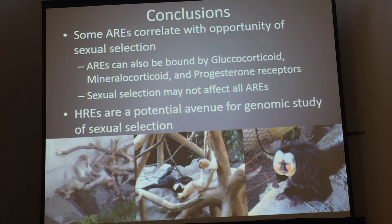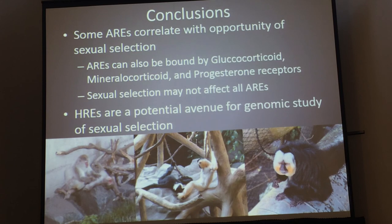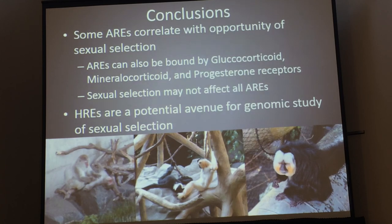In conclusion, I think hormone response elements are a potential avenue for the genomic study of sexual selection. Where I plan to go from here: I now know the position of these response elements in annotated genomes, so I'm going through and comparing which genes are under control by these response elements. I can start investigating what happens when a response element shows up, when one goes away, or when genes share a response element and what their evolutionary trajectory looks like.